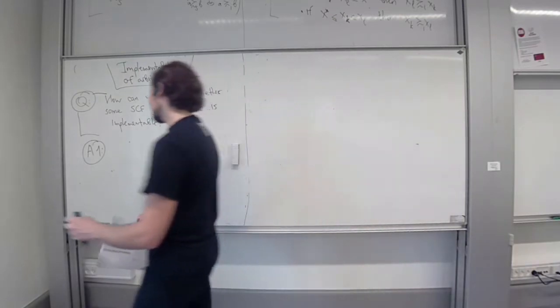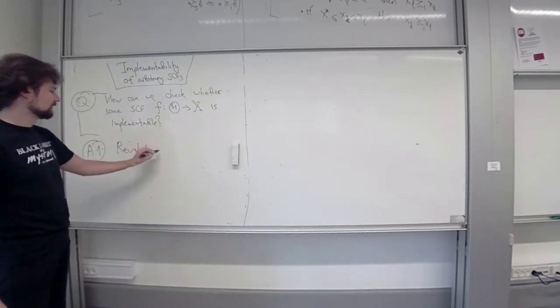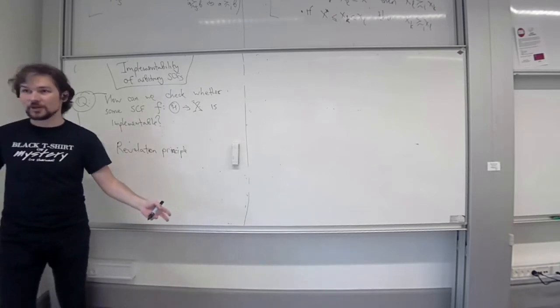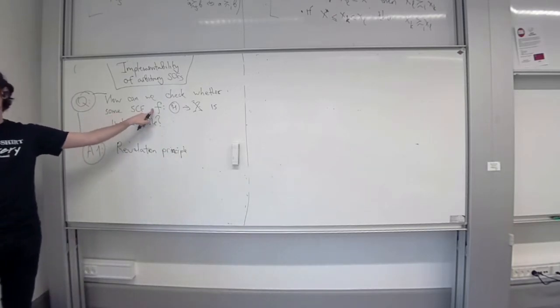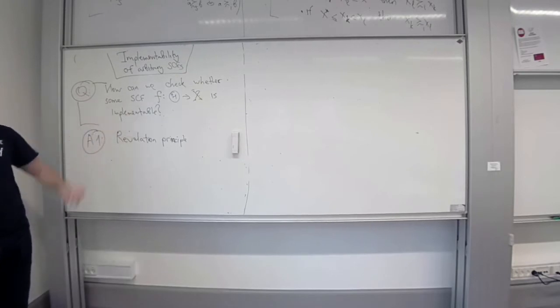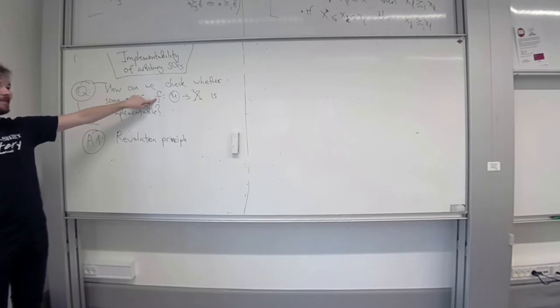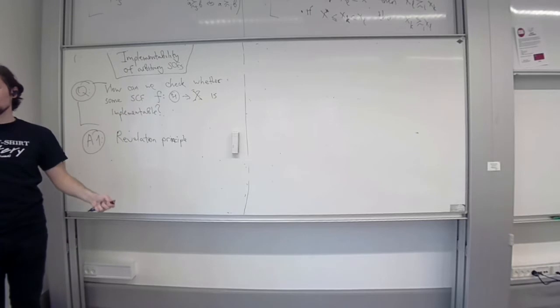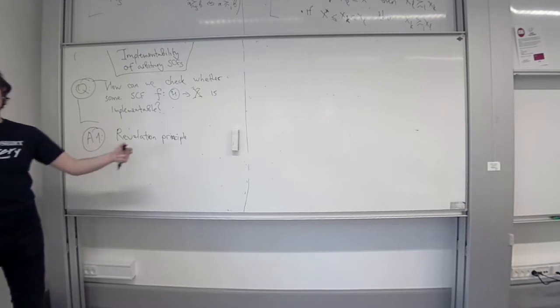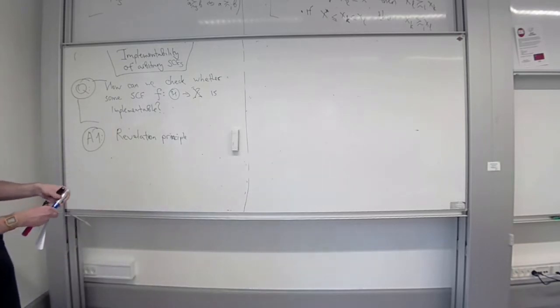Yes, the revelation principle. This was our main motivation for this principle. We said that instead of brute forcing through all possible mechanisms, we can only look at direct revelation mechanisms and check whether it implements some social choice function. The only thing we need to do is write out the incentive compatibility conditions and verify that they hold.